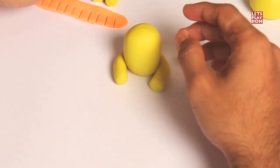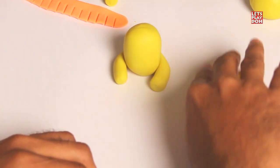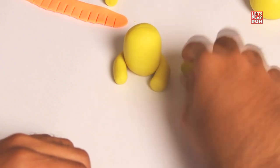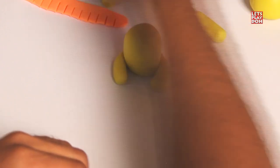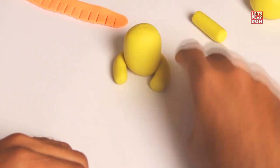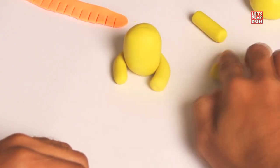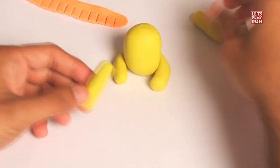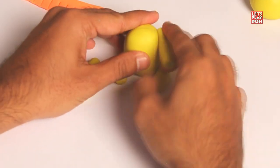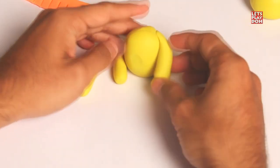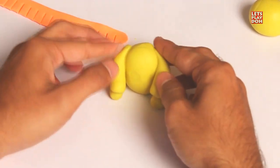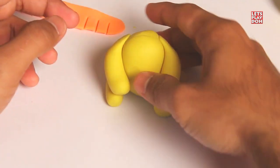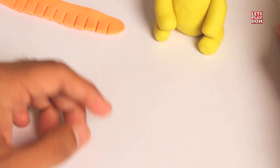And with the two front arms, you push them and press them against the body where the shoulders would be. Okay great. Now you can put the body and the four legs attached to the side.